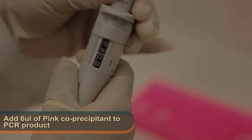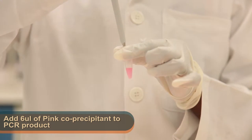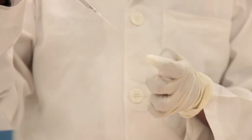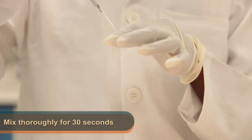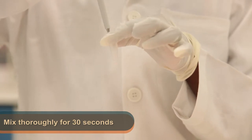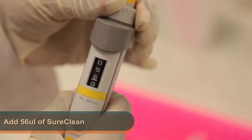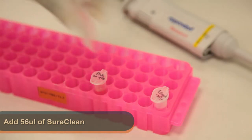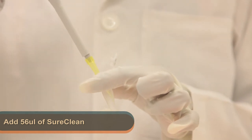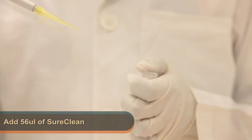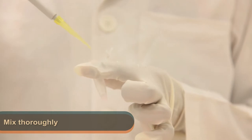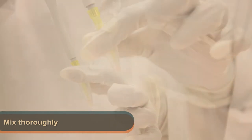Firstly, add six microliters of pink co-precipitant to the PCR product. Use the micropipette to mix the solution by pipetting thoroughly for 30 seconds. Next, add 56 microliters of sure clean solution to the PCR product. Use the micropipette to mix the solution by pipetting thoroughly for 30 seconds.